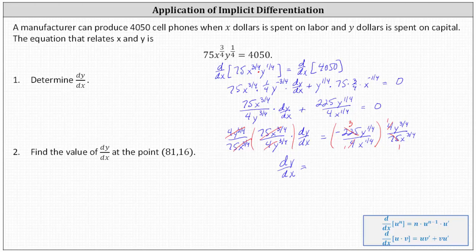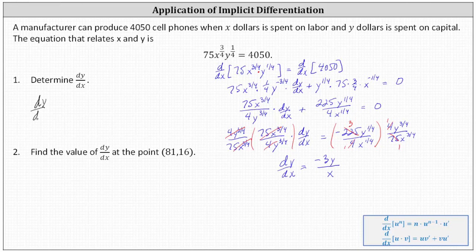So this simplifies nicely. In the numerator we have negative three times y to the one-fourth times y to the three-fourths. One-fourth plus three-fourths equals one, so the numerator is simply negative three y. The denominator is x to the one-fourth times x to the three-fourths, which is x to the first, or just x. So dy/dx is equal to negative three y divided by x.